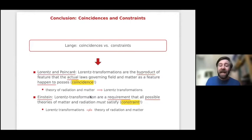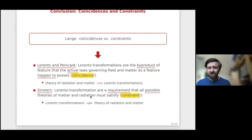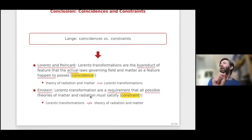To summarize: coincidences versus constraints. I think Mark Lange's distinction is quite powerful for accounting for the textual evidence. Lorentz and Poincaré considered the Lorentz transformation as a byproduct of a certain theory of matter and radiation — Maxwell's theory of radiation and possibly a speculative theory of matter based on Maxwell's electrodynamics. So the Lorentz transformations are a coincidence: if this particular theory of radiation happens to be valid, the relativity principle is justified and we cannot detect the ether. For Einstein, the Lorentz transformations are a requirement that all possible theories of matter and radiation must satisfy — they do not depend on Maxwell's equations or any other theory.